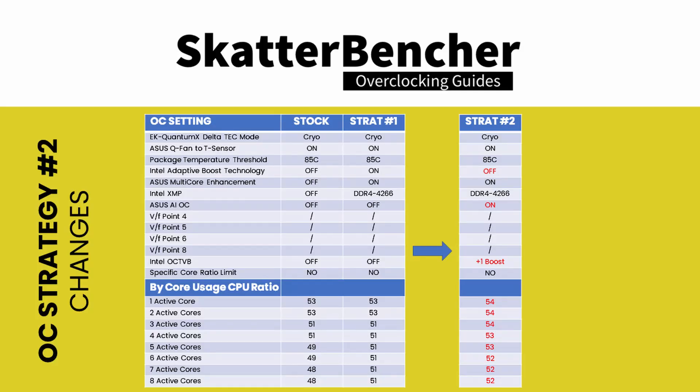In our second overclocking strategy, we no longer use Intel ABT to determine the CPU ratio, but instead we let the ASUS AI do the overclocking for us. We also use one of ASUS's OCTVB profiles to increase the CPU ratio if the temperature is low enough, thus benefiting from our Quantum X Delta TEC cryo cooler. The main difference between strategy 2 and strategy 1 is the increase of maximum CPU frequency across the board — one active core can now boost up to 5.4GHz, and when 8 cores are active, they'll boost to 5.2GHz.